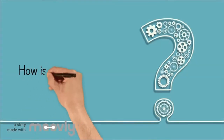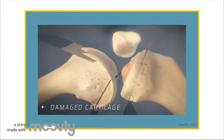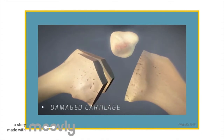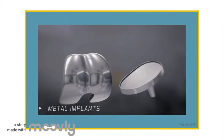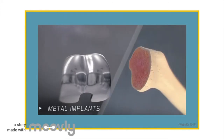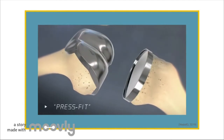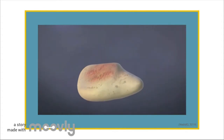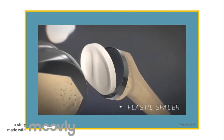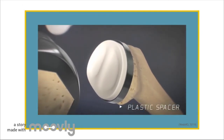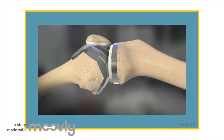In TKA, the kneecap is moved to one side and the damaged cartilage and joint is cut away along with some of the bone underneath. The damaged cartilage and bone are replaced with metal implants to make new joint surfaces. These metal pieces are held in place with cement, or they are press-fit into your bones. The underside of your kneecap may also get a new surface. A plastic spacer is put between the metal parts of your new joint to make a smooth, gliding surface. Your surgeon will bend and rotate your knee to make sure it works correctly before closing the incision.